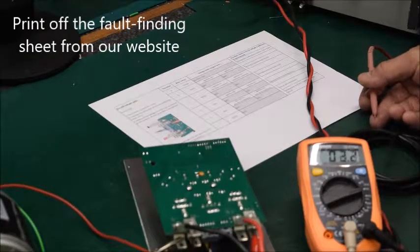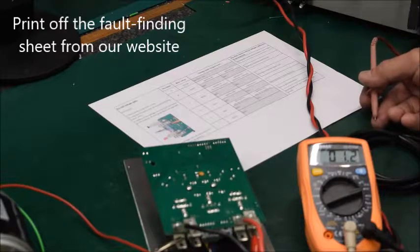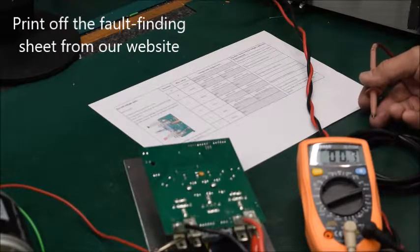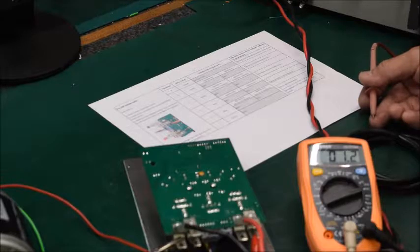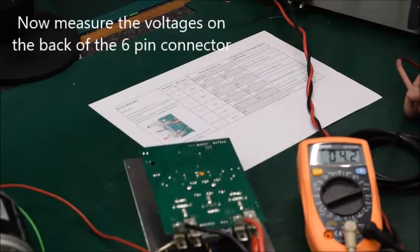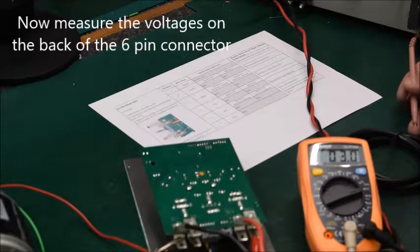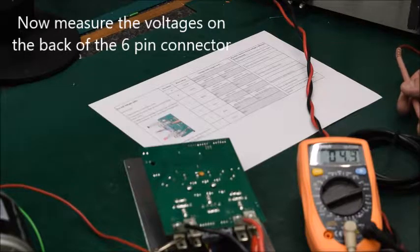Make sure you've printed off the fault finding sheet from our website and then remove the cover from the Pro 150. Next we're going to measure the voltages on the six pin connector. These can tell us a lot about what is going on with your system.